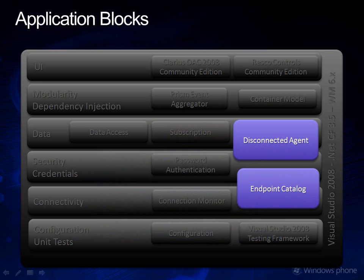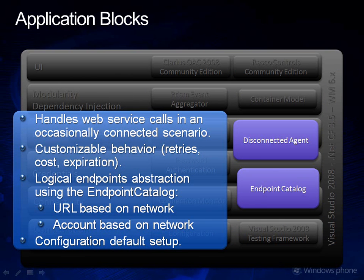For calling web services in an occasionally connected network environment, we're including the disconnected service agent block. This block encapsulates your service calls in request objects on a persistent queue and makes the calls according to the connectivity state of the device and a configurable behavior, where you can optionally define parameters like the number of retries, expiration, etc. It also uses logical endpoint names which are translated into actual addresses and account names by using the endpoint catalog. The endpoints and credentials can be defined in the configuration file but you can customize that according to your needs.